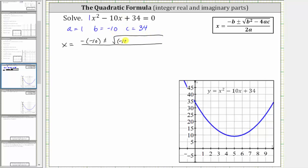of the quantity b squared, which is the square of negative 10, and then minus four times a times c, which is minus four times one times 34. All this is over two times a, which is two times one.